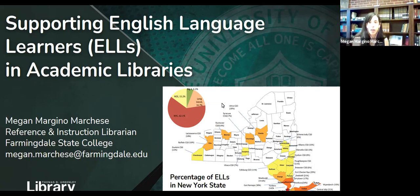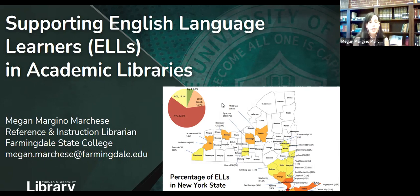Another strategy that ENL classes use a lot are word walls. This helps ELLs with their vocabulary skills — it's basically a spot on the classroom wall or whiteboard where relevant vocabulary is listed, maybe with a picture or a brief definition. You could create a word wall while teaching, which would help ELLs see the vocabulary listed. This depends on the needs of your class, so it won't be applicable for every class, but pre-teaching and vocabulary front-loading is really helpful for ELLs. Creating a word wall to introduce vocabulary before you use it in context could be a good strategy, particularly if you have a more traditional ENL class in an information literacy session.